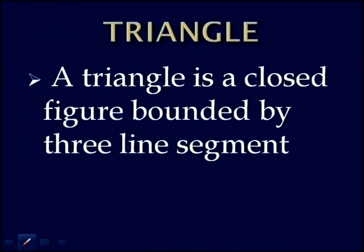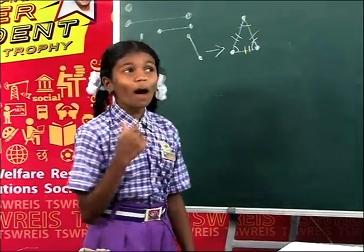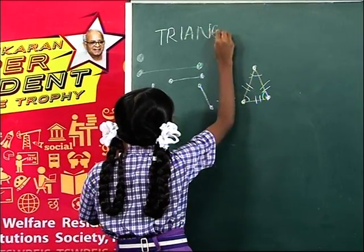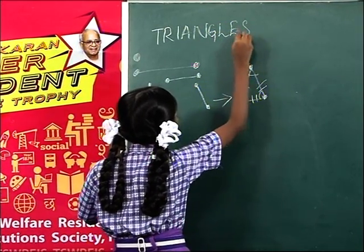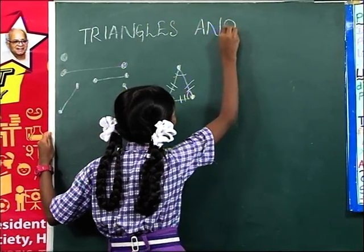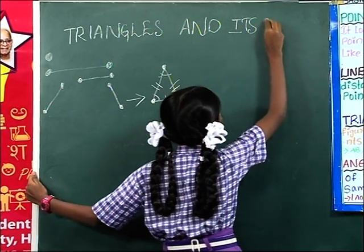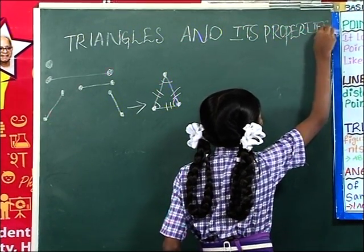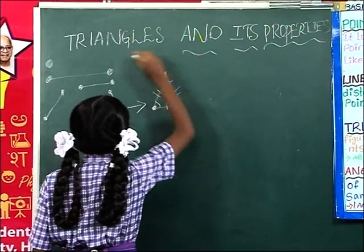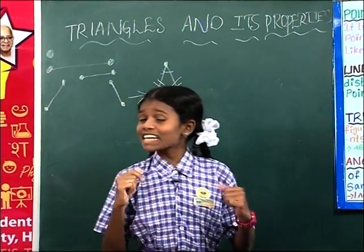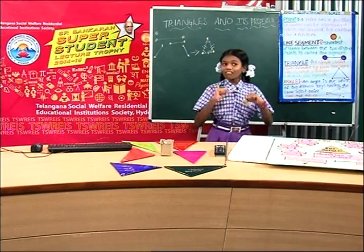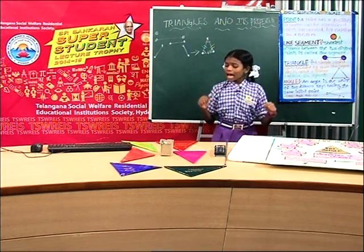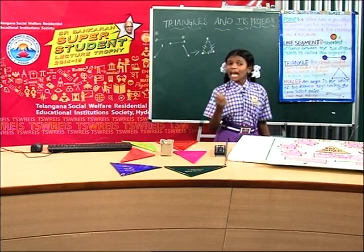Today, my topic is triangles and its properties. These triangles are classified into two types: based on sides and based on angles. In the category based on sides, we have three types of triangles.